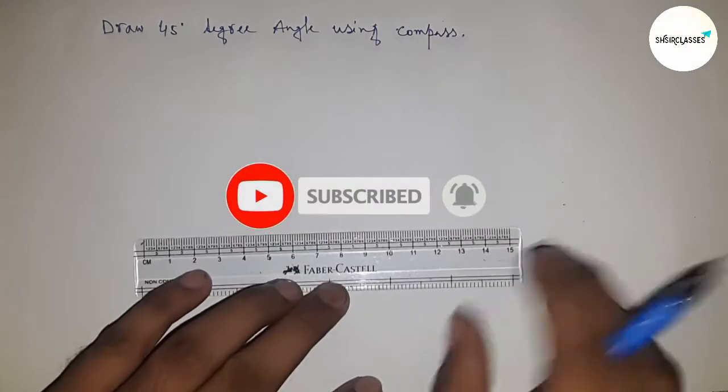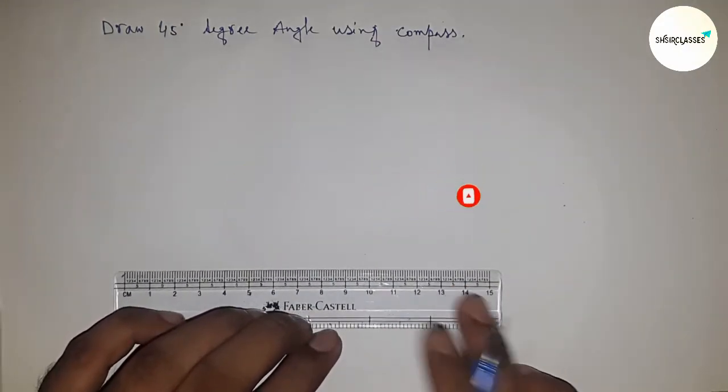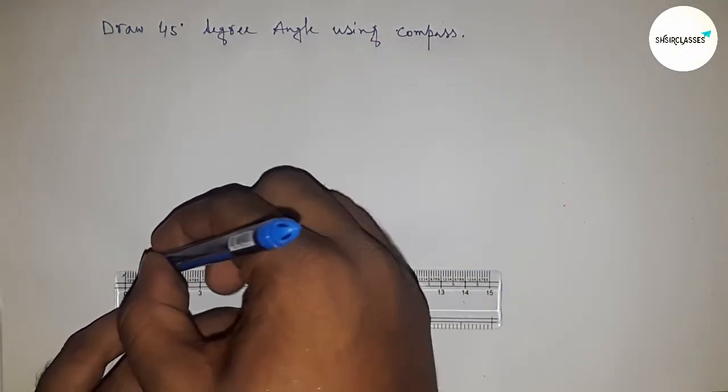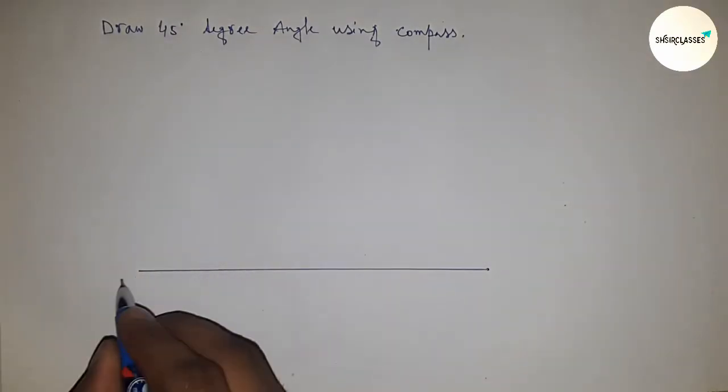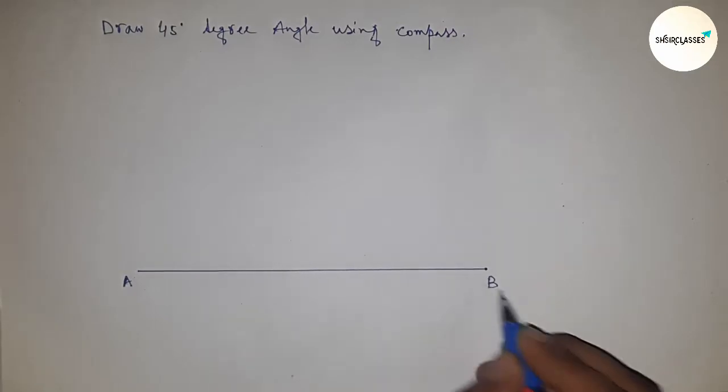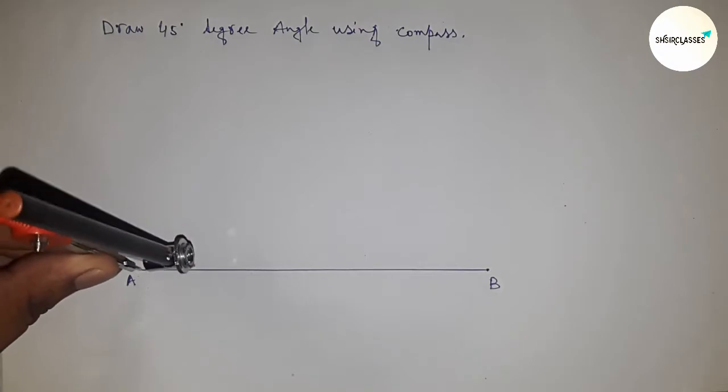First of all, draw a line of any length. This is line AB. Next, we need to construct the angle on point A, so place the compass here.